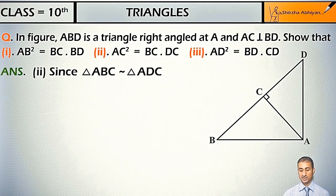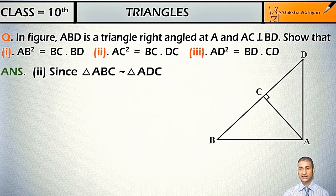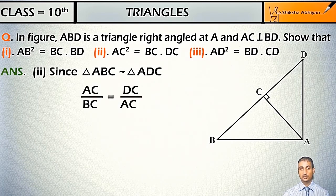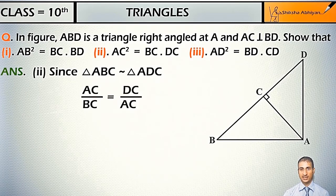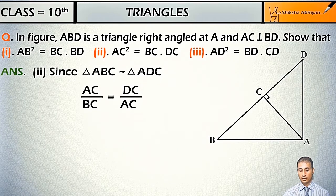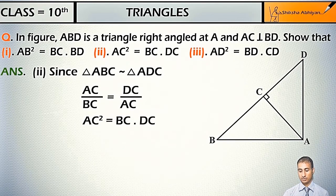Since triangle ABC is similar to triangle ADC, so I can write AC upon BC is equal to DC upon AC. So after cross multiplication, I will get AC² = BC·DC.